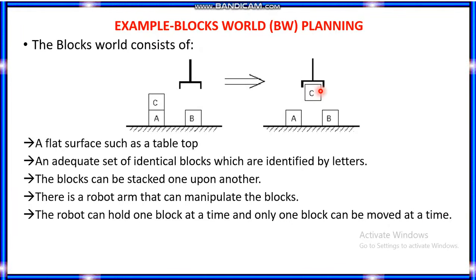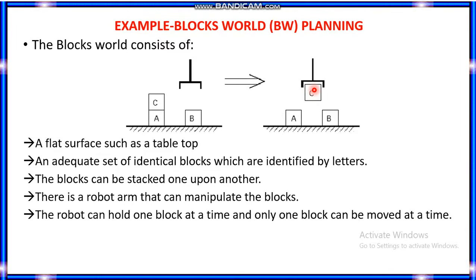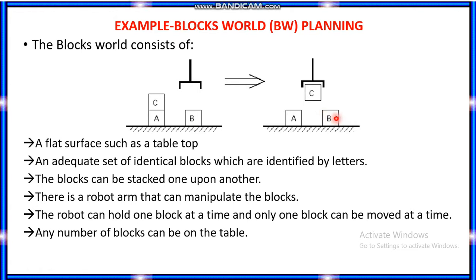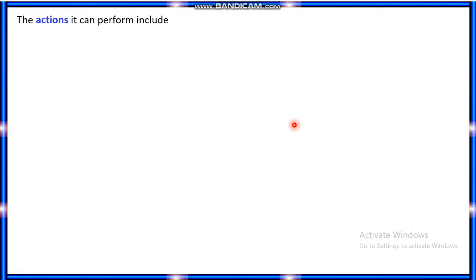This robot arm can handle only one block at a time, and only one block can be in transit. Any number of blocks can be on the table. Two blocks can be in one state and two blocks in another state. This is the example.